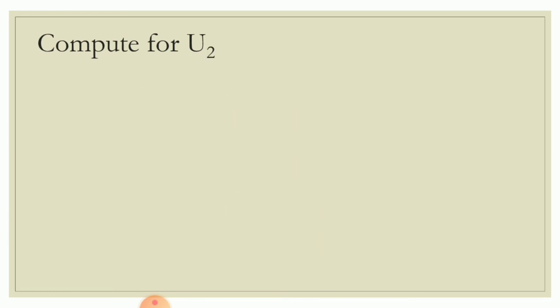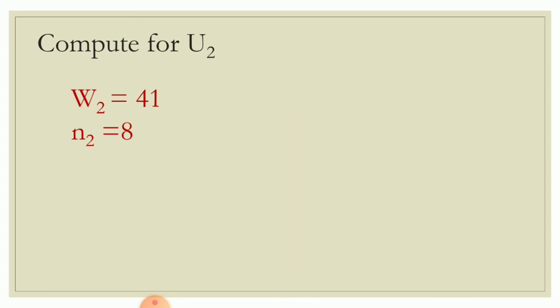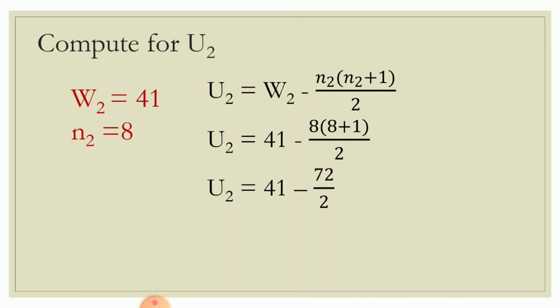Next, compute U sub 2 for group 2. The sum of ranks of group 2 is 41, and the number of observations for group 2 is 8. Substituting into the formula: U sub 2 equals 41 minus 8 times the quantity 8 plus 1, all over 2. Simplifying: 41 minus 72 over 2, which equals 41 minus 36. Therefore U sub 2 is equal to 5.